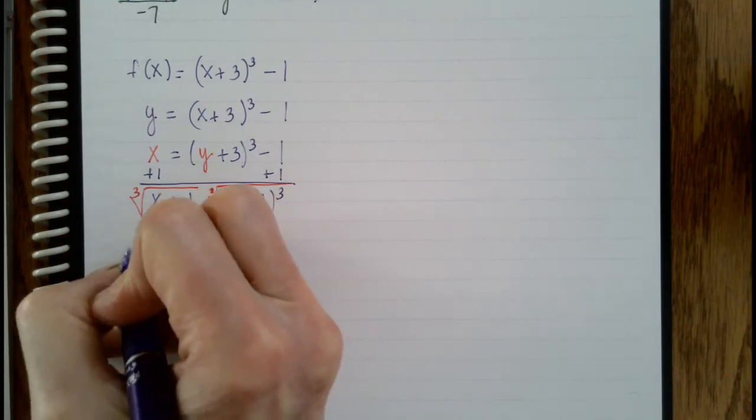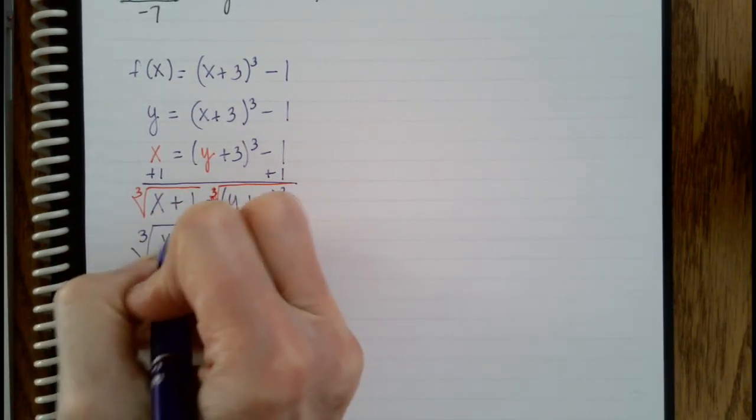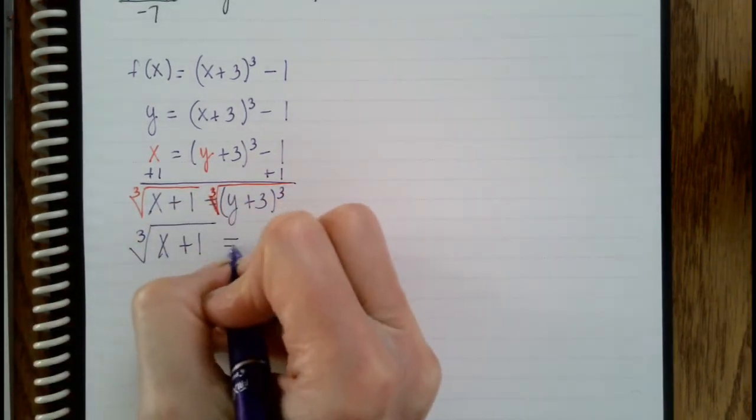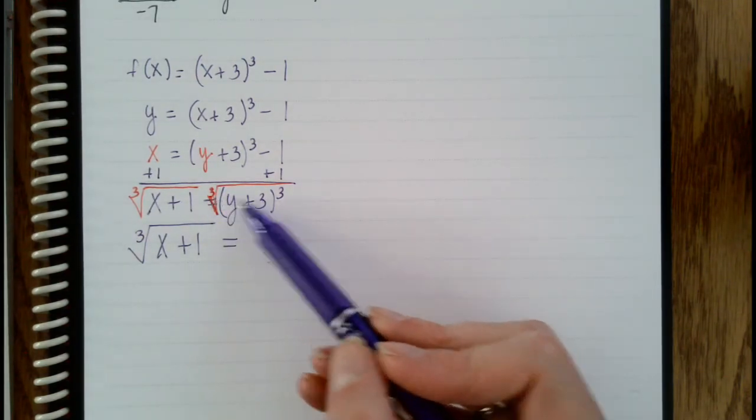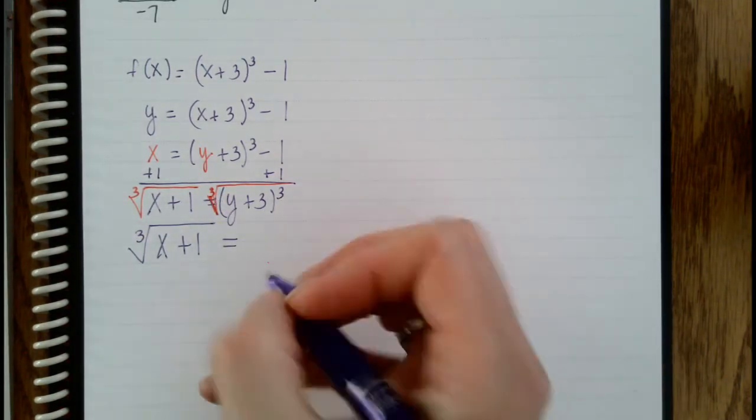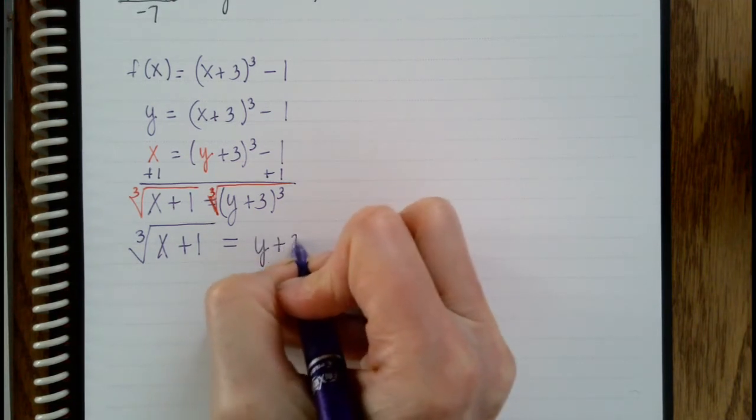So now what we have is we have the cubed root of x plus 1. Over here on the other side, cubed rooting and cubing cancel each other out. So we get y plus 3.